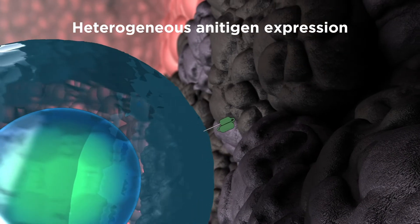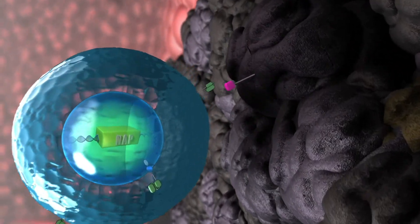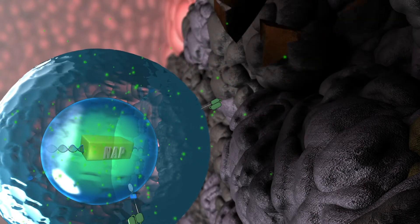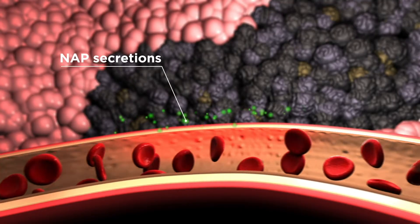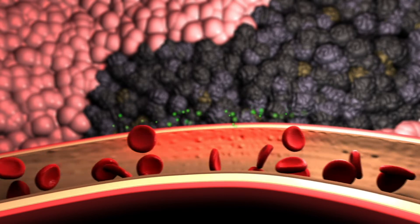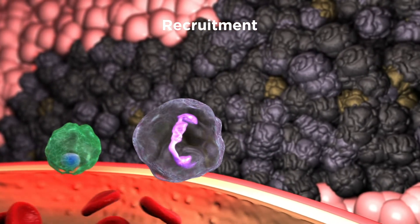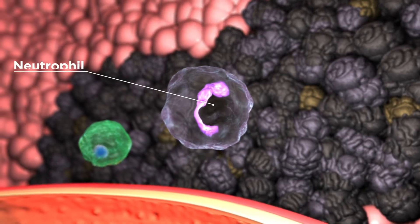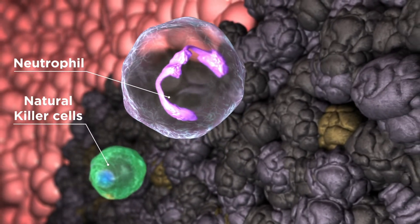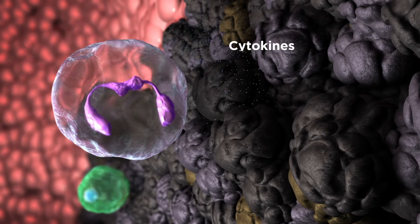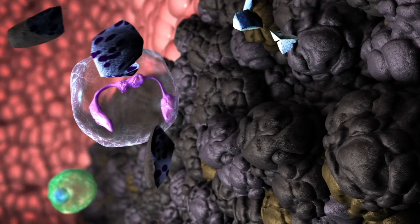CAR-NAP T cells also secrete NAP when they kill the tumour cells. NAP works as a chemo-attractant, recruiting innate immune cells such as neutrophils, monocytes and natural killer cells to directly kill tumour cells and secrete cytokines.